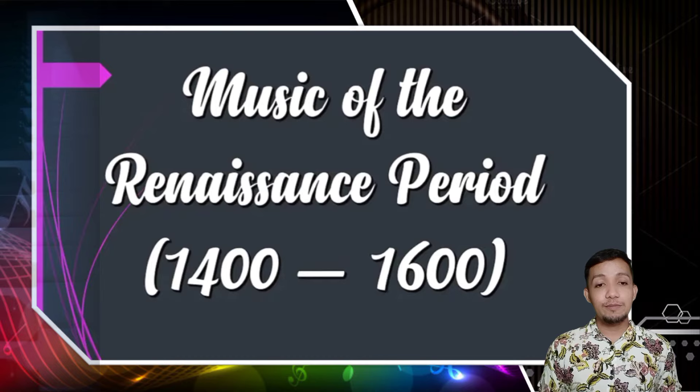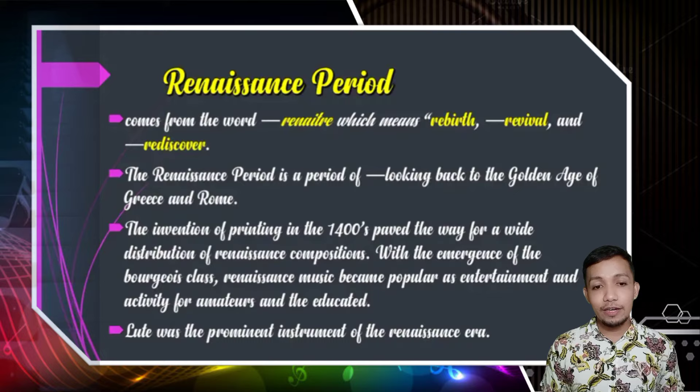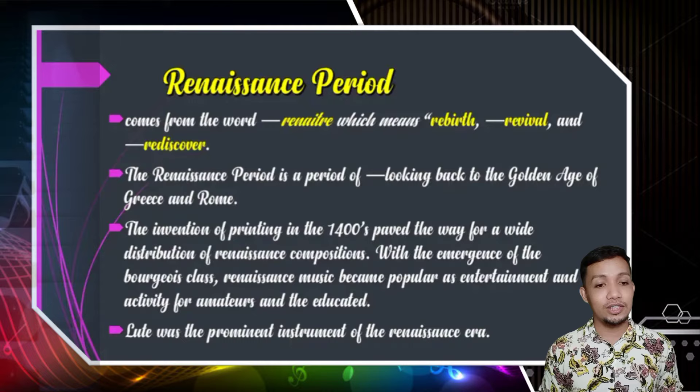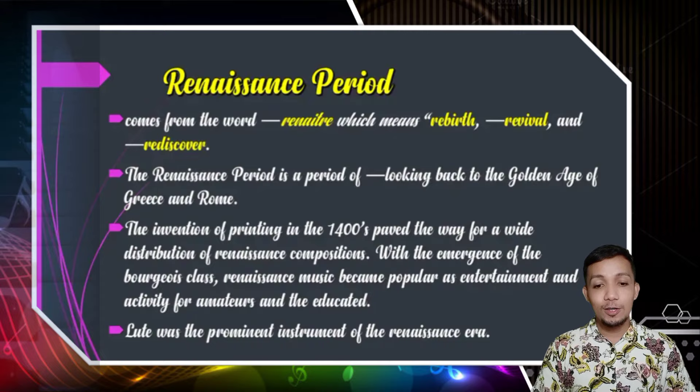Now, let us proceed to the music of the Renaissance period, which started in the year 1400 and ended in the year 1600. Renaissance comes from the word Renaître, which means rebirth, revival, and rediscover. The Renaissance period is a period of looking back to the golden age of Greece and Rome. The invention of printing in the 1400s paved the way for a wide distribution of Renaissance compositions. With the emergence of the bourgeoisie class, Renaissance music became popular as entertainment and activity for amateurs and the educated. Lute was the prominent instrument of the Renaissance era.